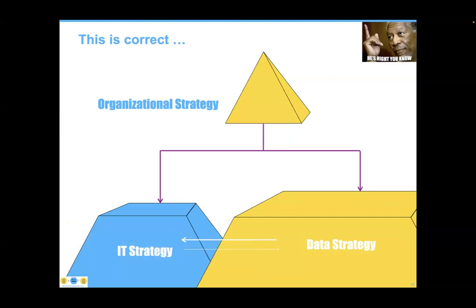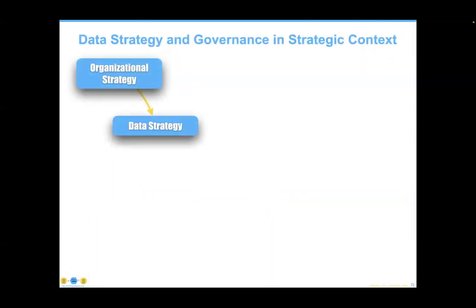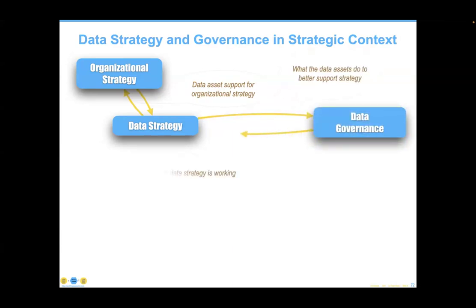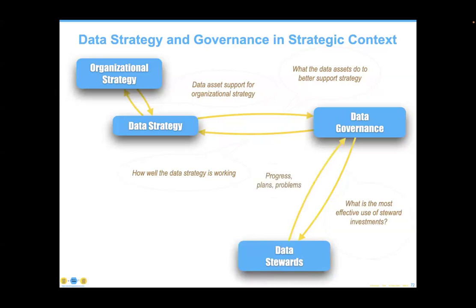The organizational strategy should drive both the IT strategy and the data strategy, but the data strategy probably has more influence over the IT strategy than the IT strategy has over the data strategy. For example, Windows telling us when Windows 10 is going to disappear doesn't give organizations a strategic bump just by going to Windows 11. Looking at strategy and governance in context: our organizational strategy and data strategy should work hand in glove, with data assets supporting organizational strategy as the main driver of data governance activities.